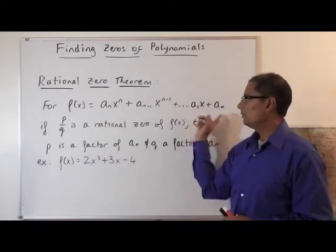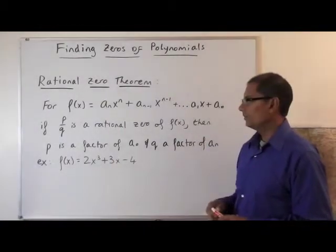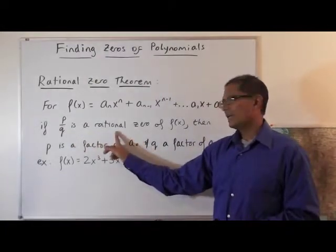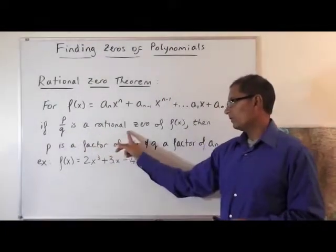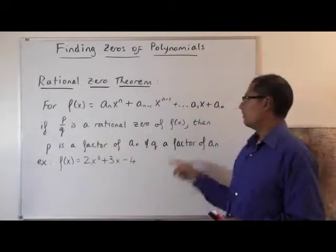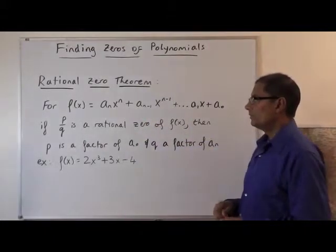So remember a₀ through aₙ are the coefficients. If those coefficients are integers and p over q, so p over q is some rational number like a fraction, is a rational zero of the function, then p is a factor of the constant term and q is going to be a factor of the lead term.